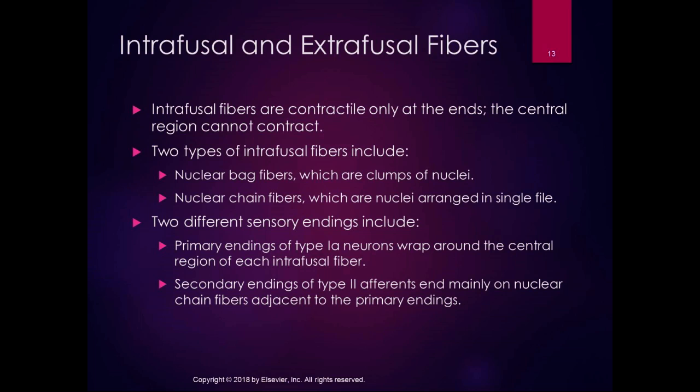The central region is where those 1A fibers go in, and they're telling us just the length of the muscle. There are two different kinds of intrafusal fibers — you don't need to know this specifically, just know there are two kinds — and two different kinds of sensory nerve endings. The primary endings of type 1A neurons wrap around the central region of each intrafusal fiber and tell us the length of the muscle. The secondary endings of type 2 afferents are mainly on the nuclear chain fibers adjacent to the endings, and those tell us the rate of change.